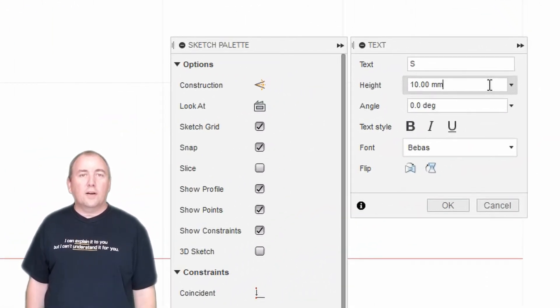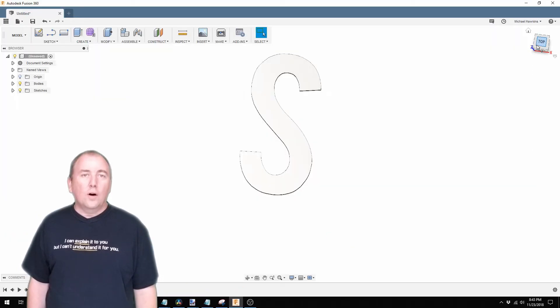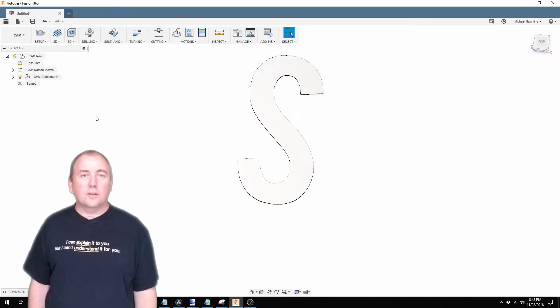My CNC does everything in millimeters. So in Fusion when I model things I use millimeters instead of inches just to keep things simple. Once I had my model I switched to the CAM workspace in Fusion. The CAM workspace is where we create the gcode used by the CNC.